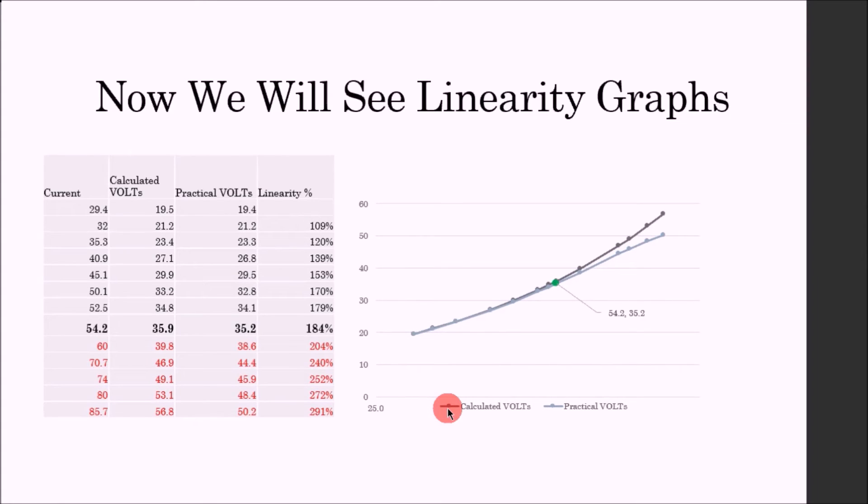Now we will see the linearity graphs. Now as you have seen, everything is clear to you now. Here we started with 29.4 with a voltage of 19.5. This is the calculated voltage and practical voltage. So practically we got 19 volts. Then we increased the currents: at 45 it is expected to have 29.9, we practically got 29.5.